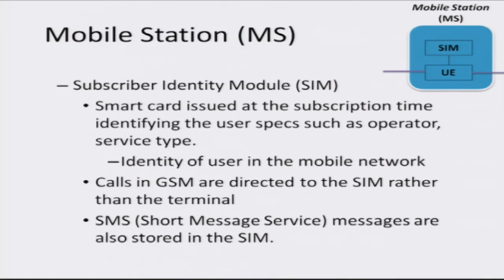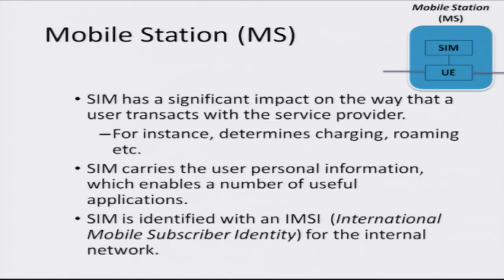The other important component of the mobile phone is the SIM, or Subscriber Identity Module. This is a smart card issued at the time of subscription to a service by a particular operator, and it serves as your identity in the network. Calls in GSM are directed to a SIM, and short messages are stored on the SIM. The SIM determines how much you are charged for calls, the roaming aspects of your phone, and stores personal and subscription information. The SIM is identified by the IMSI — International Mobile Subscriber Identity — which carries your subscription information on the network.